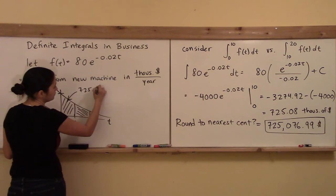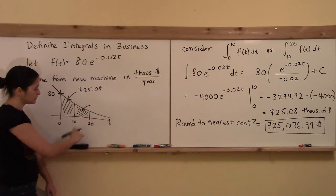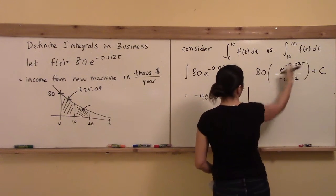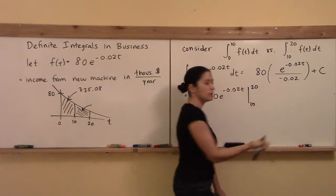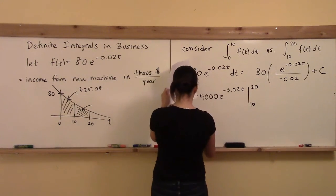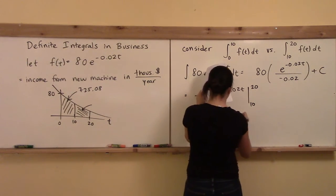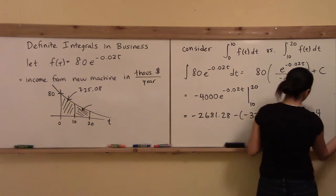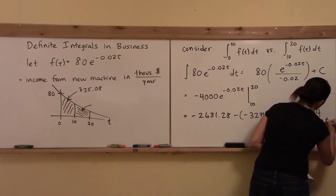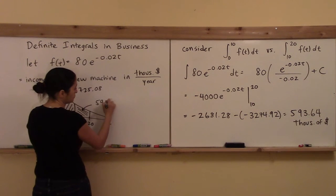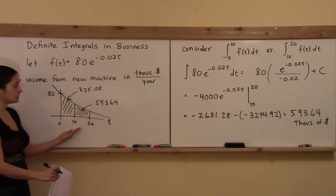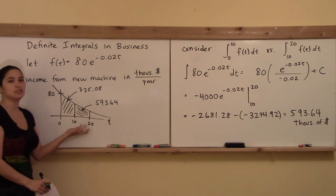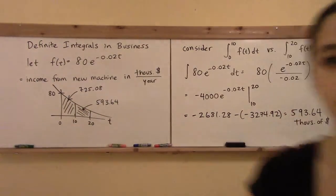For the integral from 10 to 20, using the same indefinite integral with bounds 10 and 20: evaluating at t = 20 gives -2681.28 and at t = 10 gives -3274.92. Subtracting gives 593.64 thousand dollars. Comparing both results: in the first 10 years the machine earns 725.08 thousand dollars, while in years 10 through 20 it earns 593.64 thousand dollars — less, as expected since the machine ages.